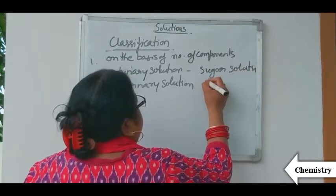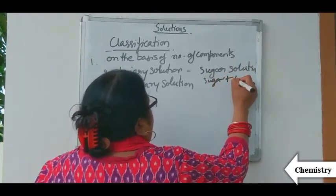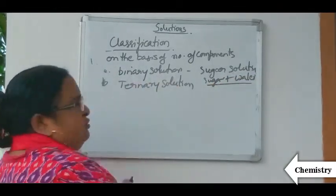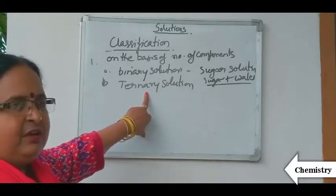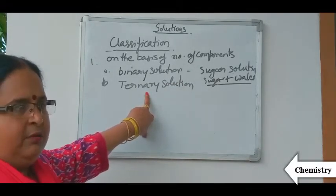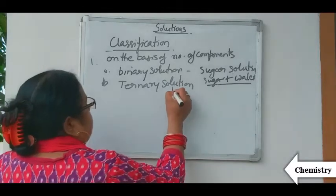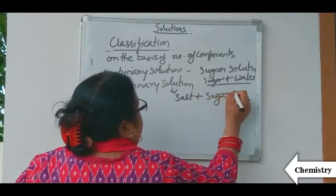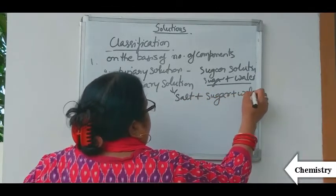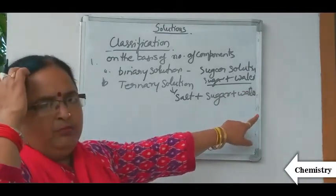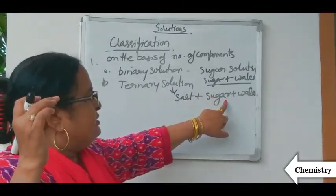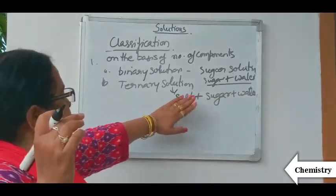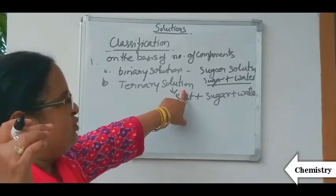Sugar solution contains sugar plus water — two components, that is binary solution. Moving to ternary solution: ternary solution contains three components. For example, salt plus sugar plus water — here there are three components: salt, sugar, and water. This type of solution is considered a ternary solution.